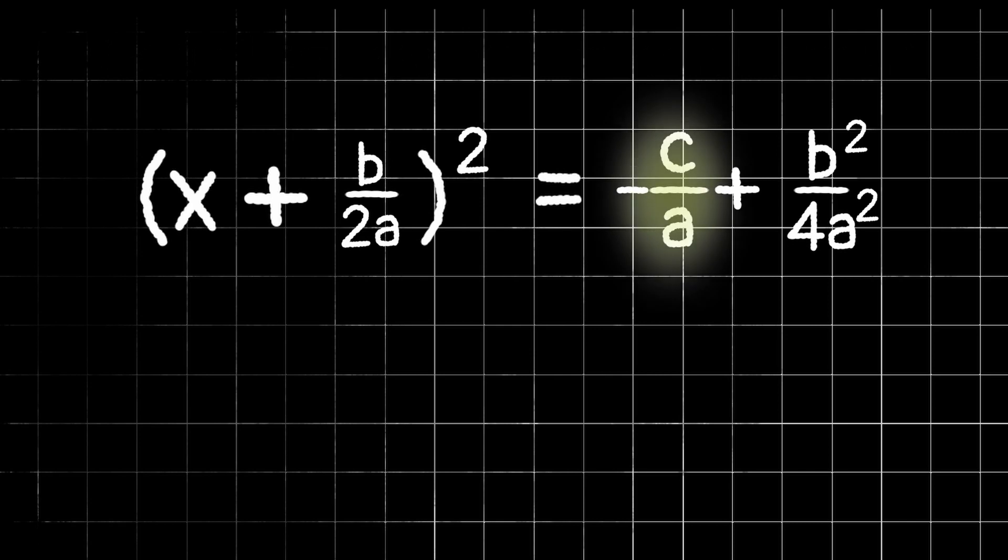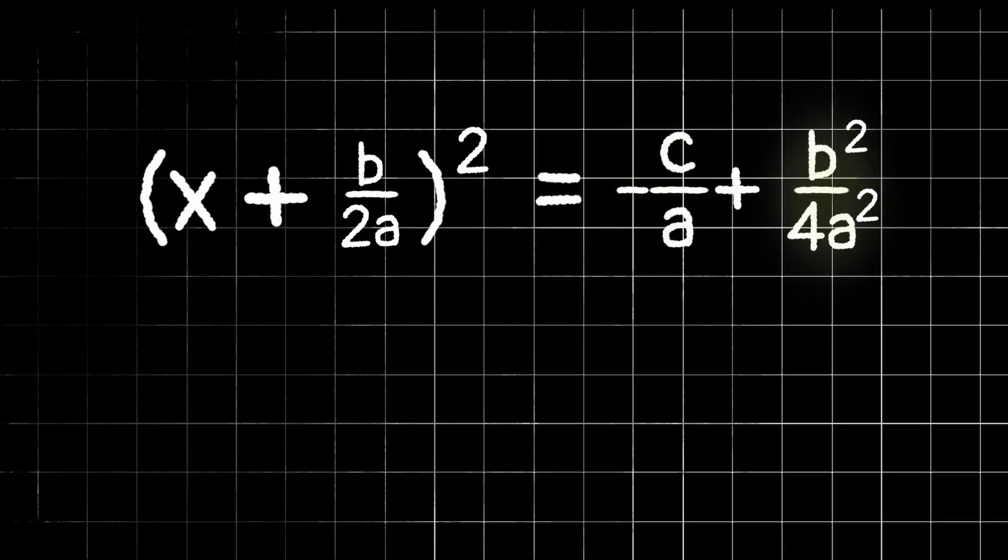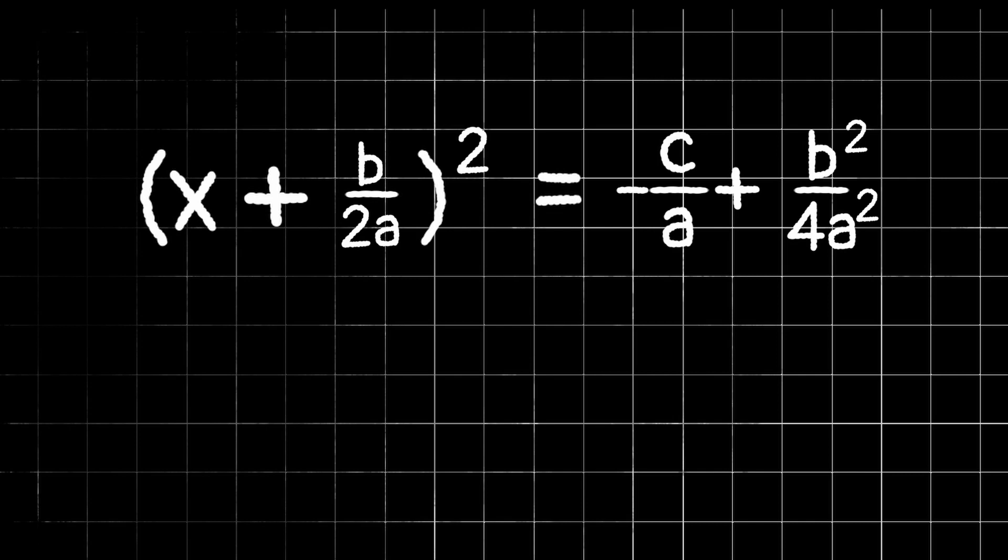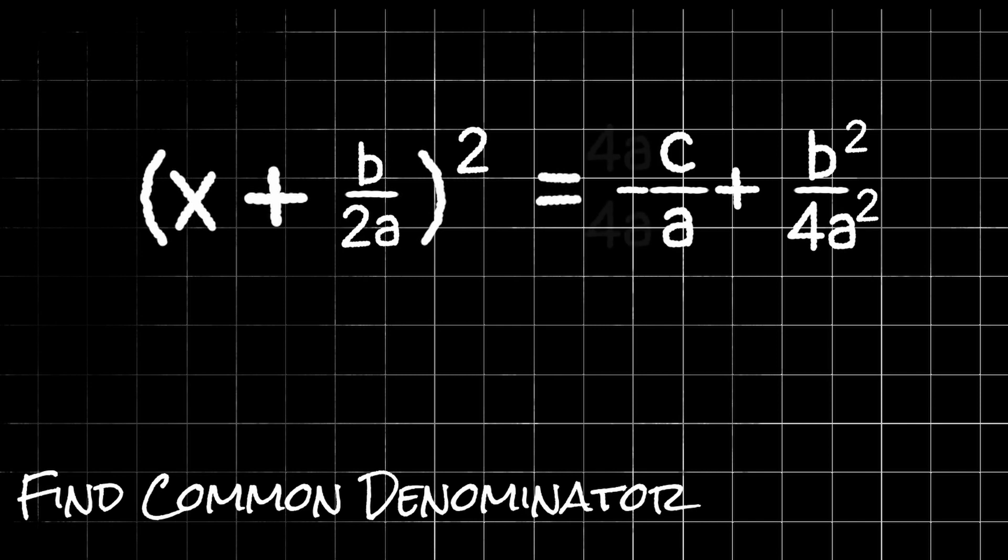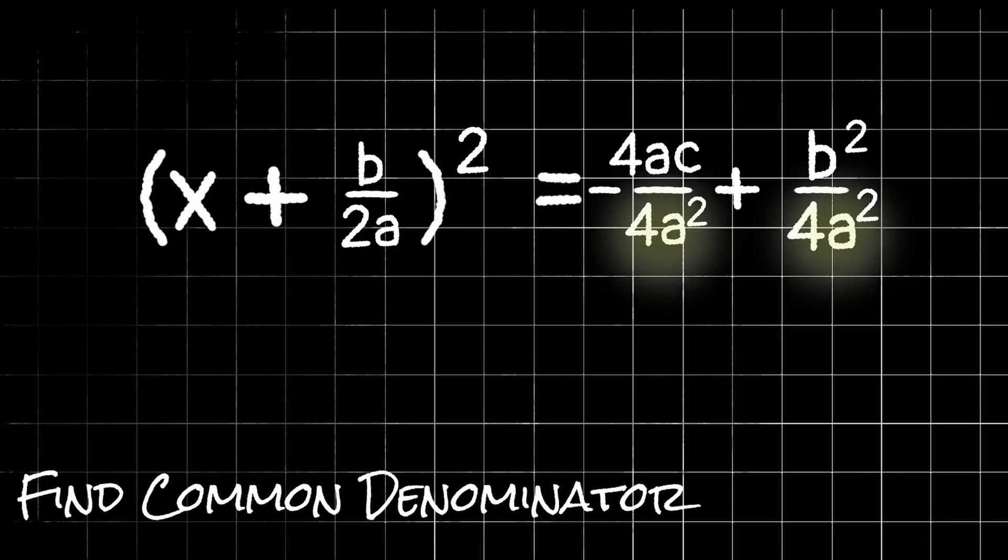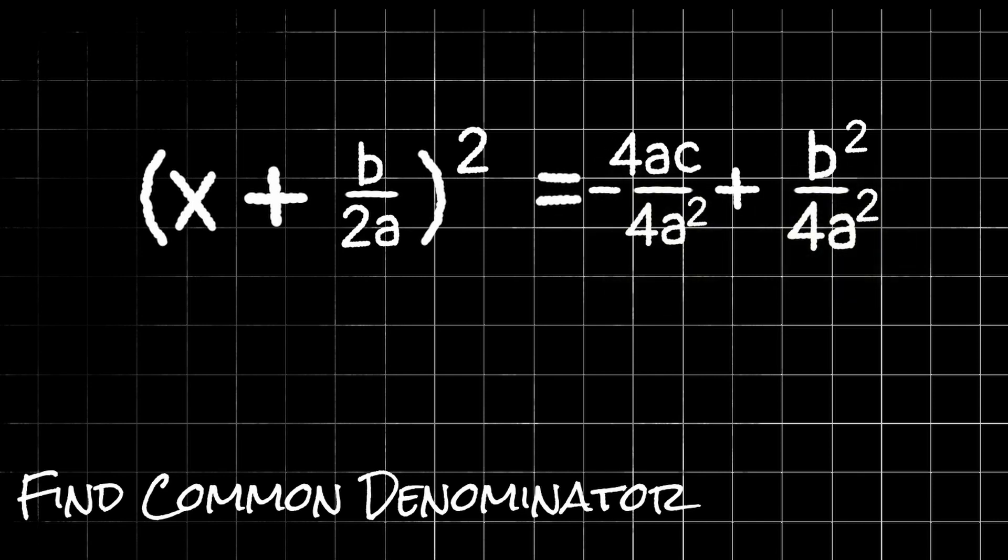We have two fractions being added together. So in order to combine those into one fraction, we need a common denominator. We can make this first fraction have a denominator of 4a squared to match the second. If we multiply the top and the bottom by 4a, remember we have to do the top and the bottom because that's essentially like multiplying by 4a divided by 4a, which is one. And if we multiply anything by one, then we're not changing the value of it. So if we multiply the top and the bottom of this fraction by 4a, we now have two fractions with the same denominator so we can add them together into one fraction.